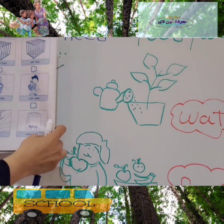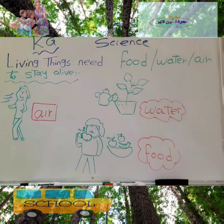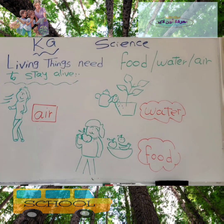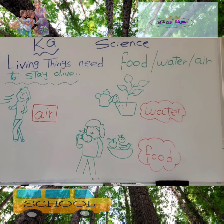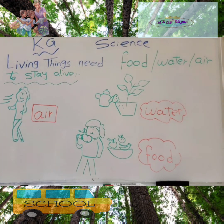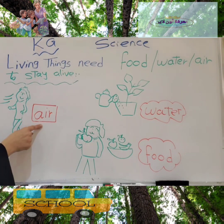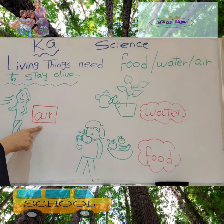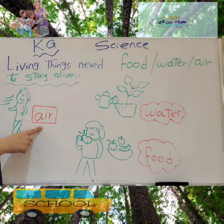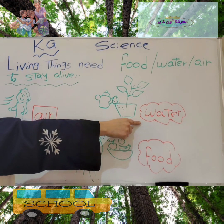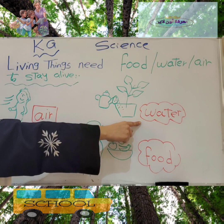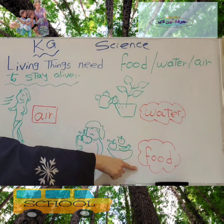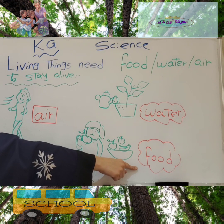What are the main basic needs for any living things? We have three basic needs. Repeat after me: food, water, air. We need air to breathe. We need water to drink. We need food to eat.